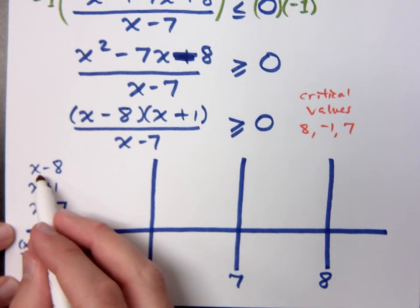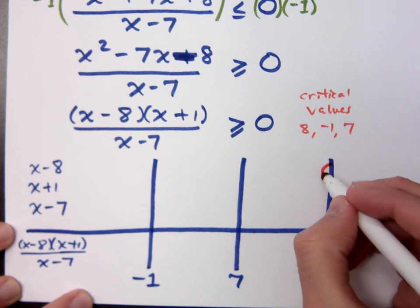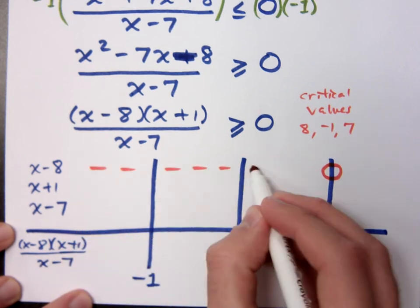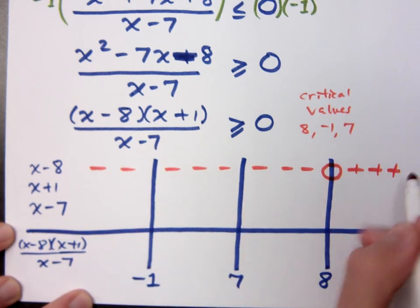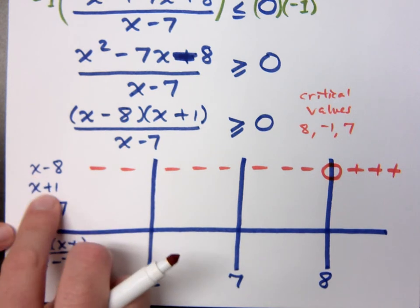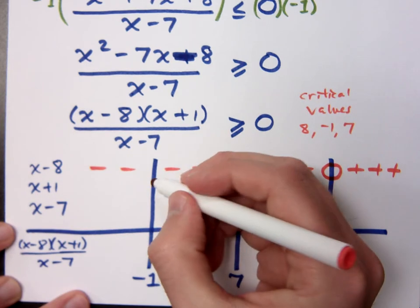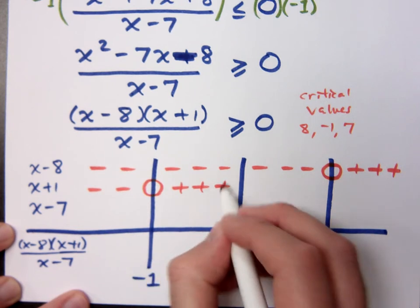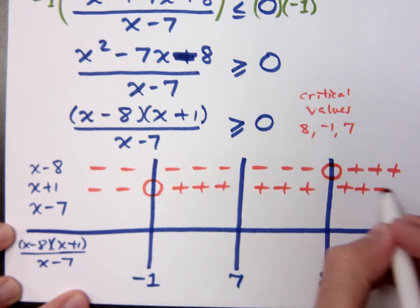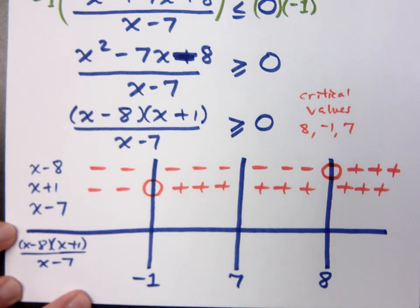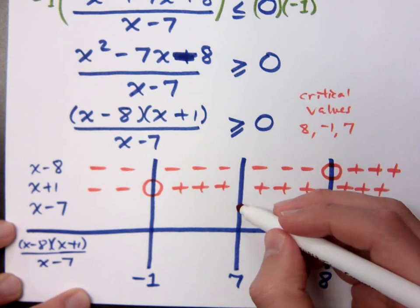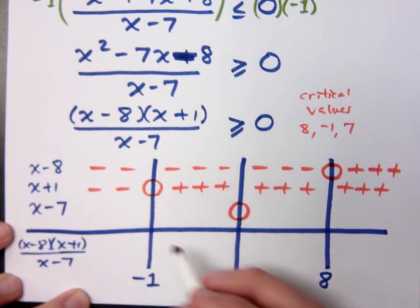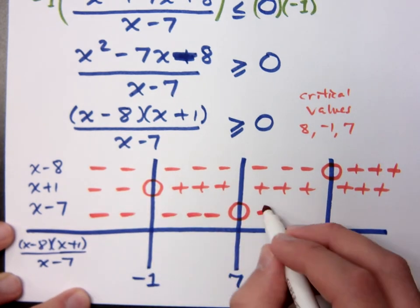What value would make x minus 8 equal to 0? Who's this gatekeeper? 8, what signs does he have on the left? They're all negative on the left, positive on the right. And remember, that's because he has a positive coefficient here for the x. What about x plus 1? Who is his gatekeeper? Negative 1, so that's 0 there. It's a positive coefficient, so negative on one side, positive on the right. What about x minus 7? Who is his gatekeeper? So, he's 0 here at 7. Positive coefficient for x, so that means what on the left? Negative. And then positive on the right.